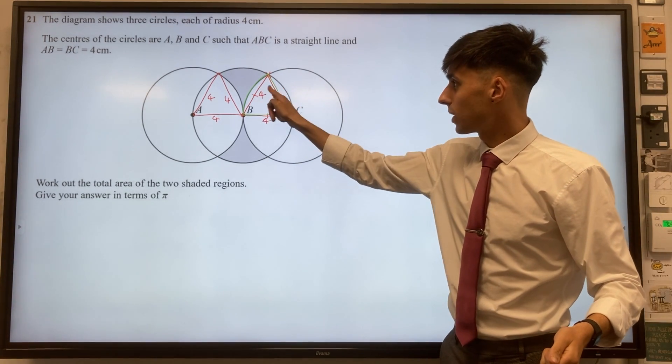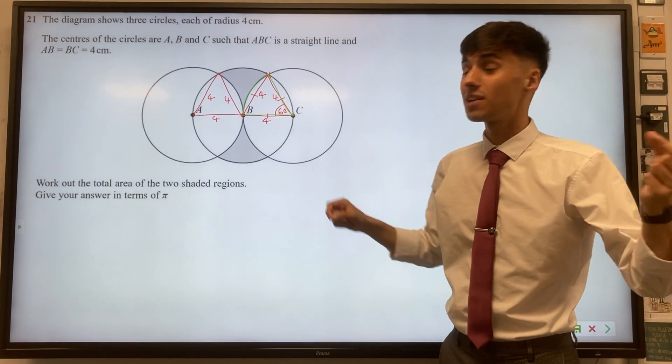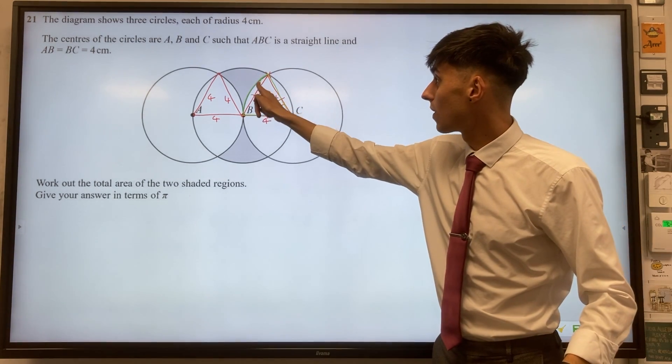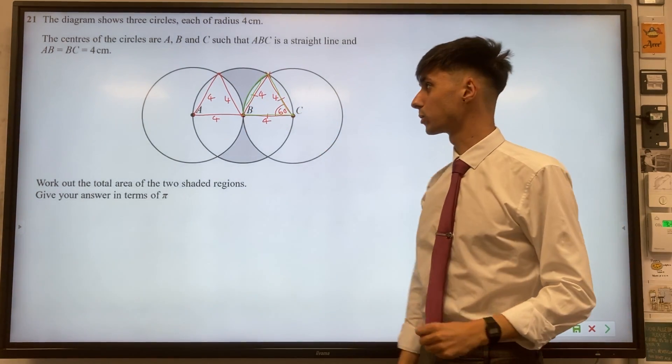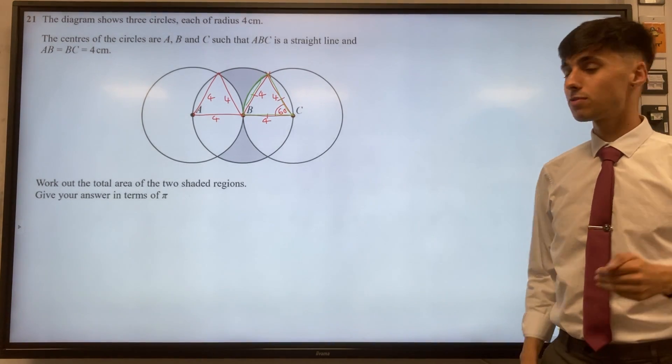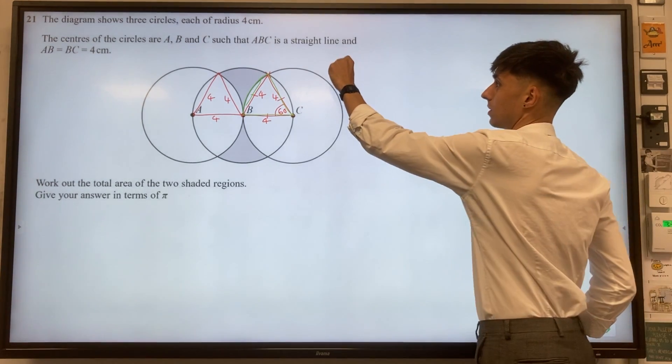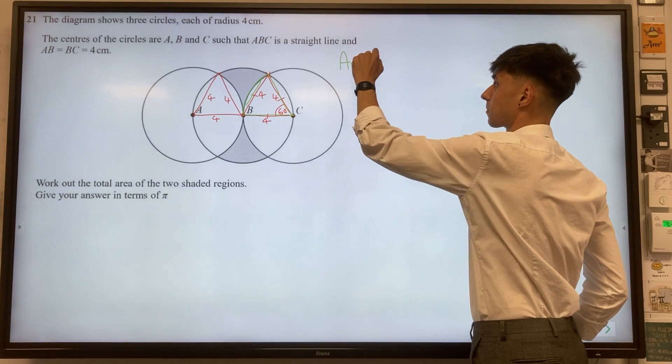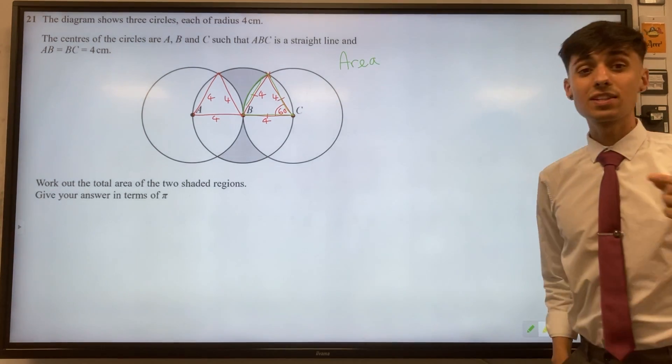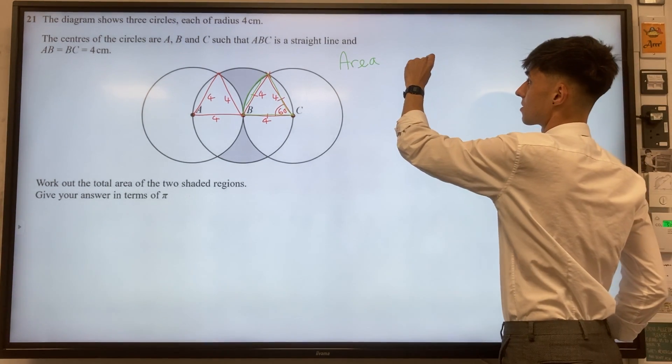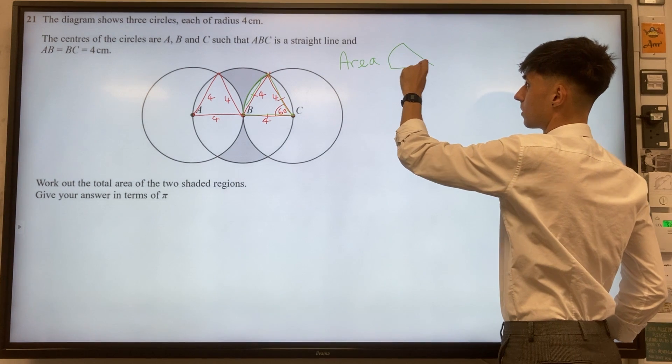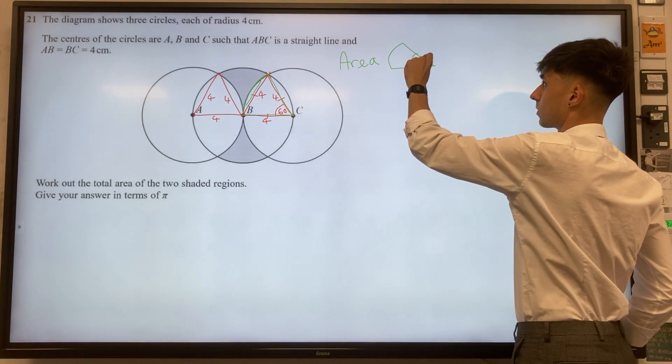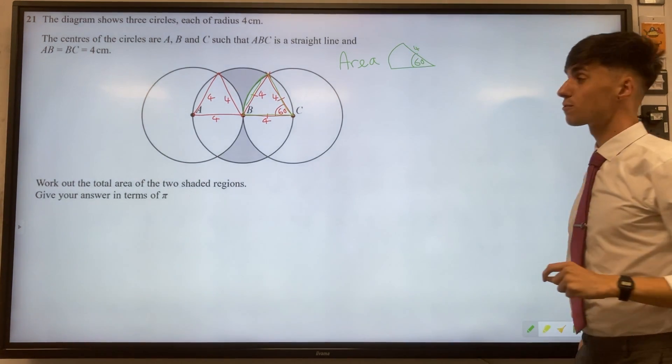This sector is made up of two parts: the equilateral triangle here and also this smaller segment outside of the equilateral triangle. Let's find the area of this pizza slice shape with radius 4 and angle 60 in the middle.